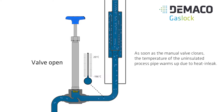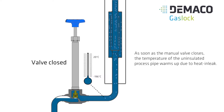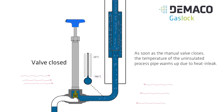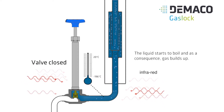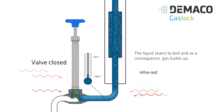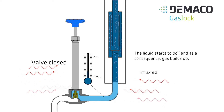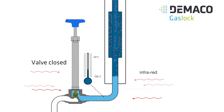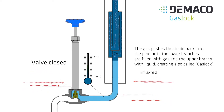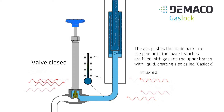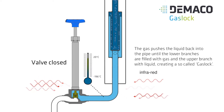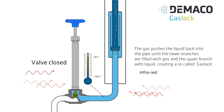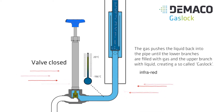As soon as the manual valve closes, the temperature of the uninsulated process pipe warms up due to heat-in leak. The liquid starts to boil, and as a consequence, gas builds up. The gas pushes the liquid back into the pipe until the lower branches are filled with gas and the upper branches with liquid, creating a so-called gas lock.